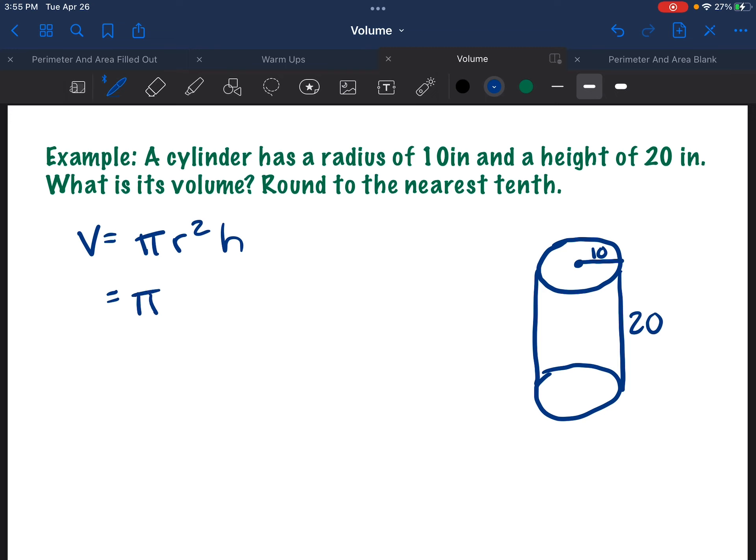Recall that the volume of a cylinder is pi r squared times the height. So you would just do pi times the radius squared, so 10 squared times the height, which is 20, which would give you approximately 6,283.18, which will round to 6,283.2. Kept putting that decimal in the wrong spot. All right. That is how you find the volume of those shapes.